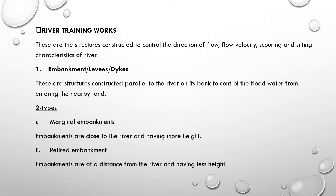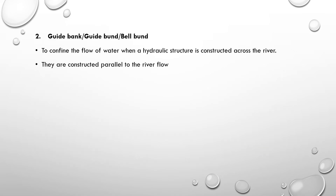The flood water is controlled from entering nearby land. Embankments are constructed parallel to the river. Embankments close to the river and having more height are called marginal embankments. Embankments at a distance from the river and having less height are another type. These are the two types of embankment — the first is called the guide bank or guide bund or bell bund.